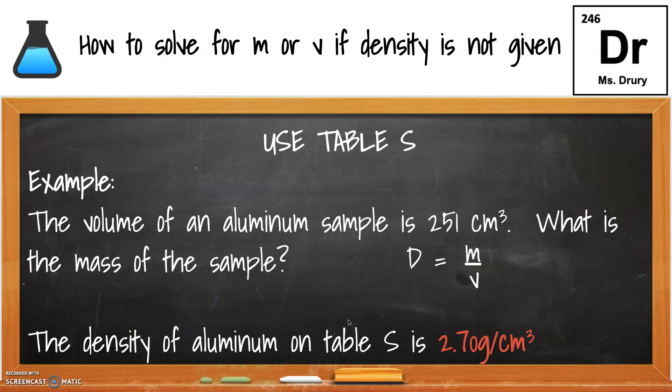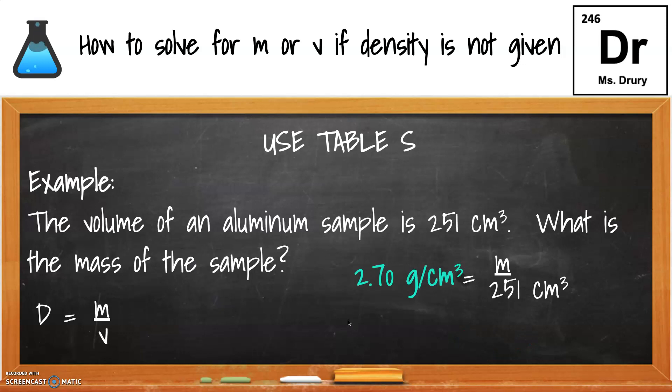Now that you know the density, you can plug the numbers in. The density is 2.7. The volume is 251. We cross-multiply like the previous examples, and we solve for mass, and we check our sig figs. Three were given, so we keep three.